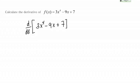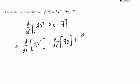We know from the sum rule that the derivative of a sum is the sum of the derivatives. That also applies to differences as well, because differences can be written as sums with negative numbers. So I'm going to split this derivative up into the sum of the derivatives. In other words, this equals the derivative with respect to X of 3X to the fourth minus the derivative with respect to X of 9X plus the derivative with respect to X of 7.